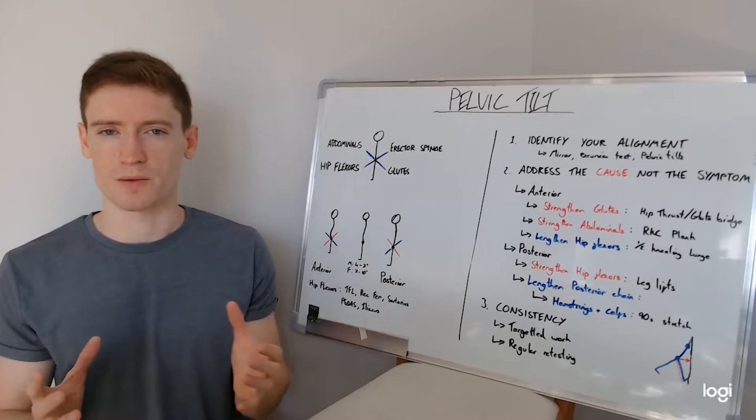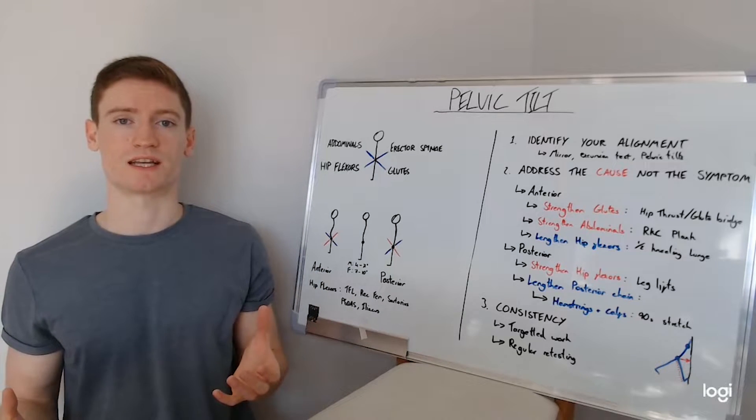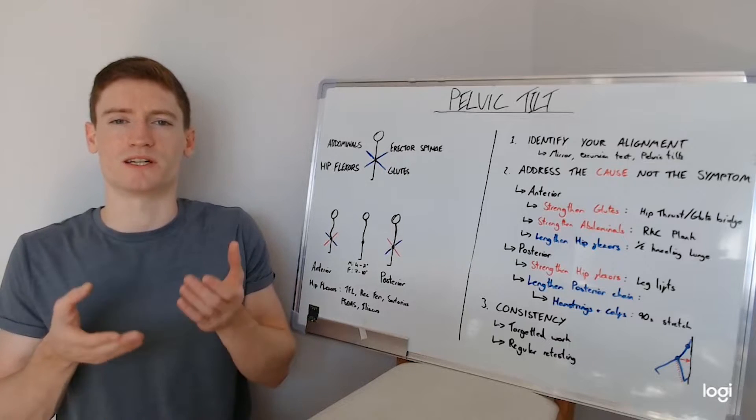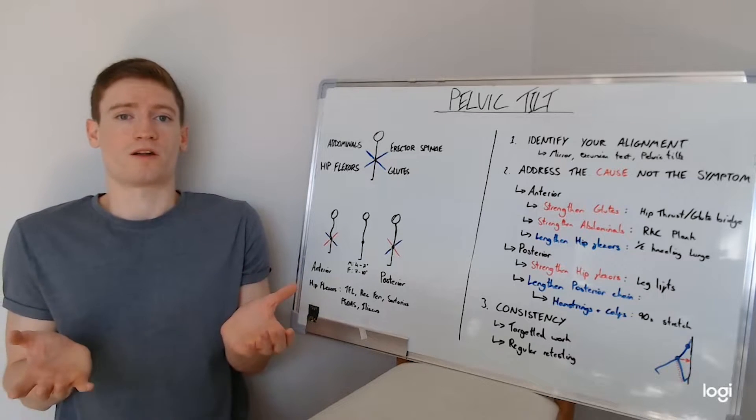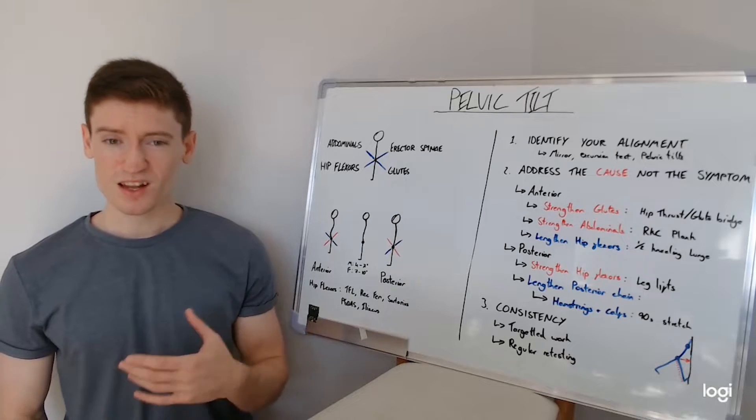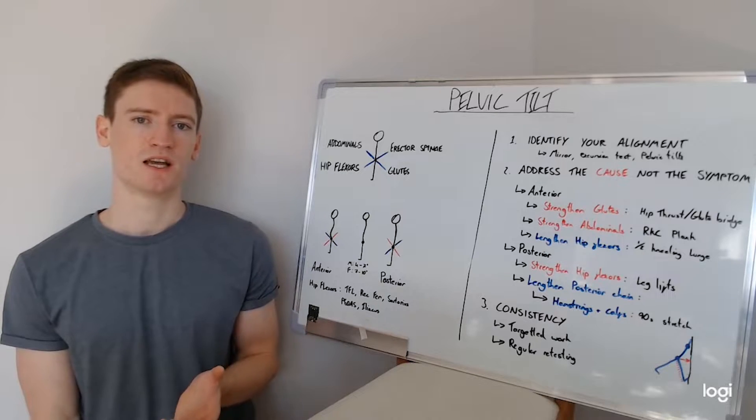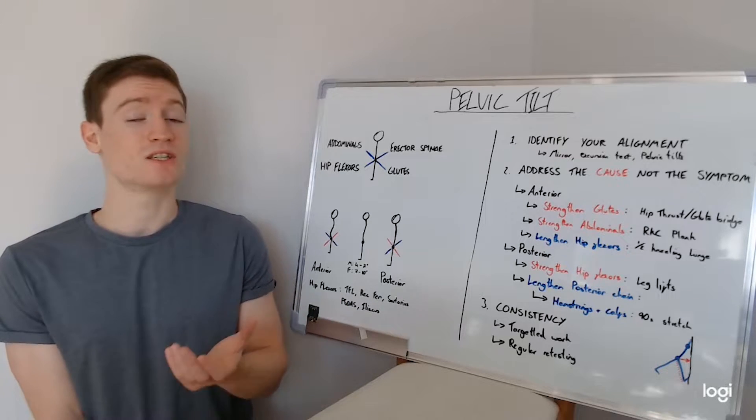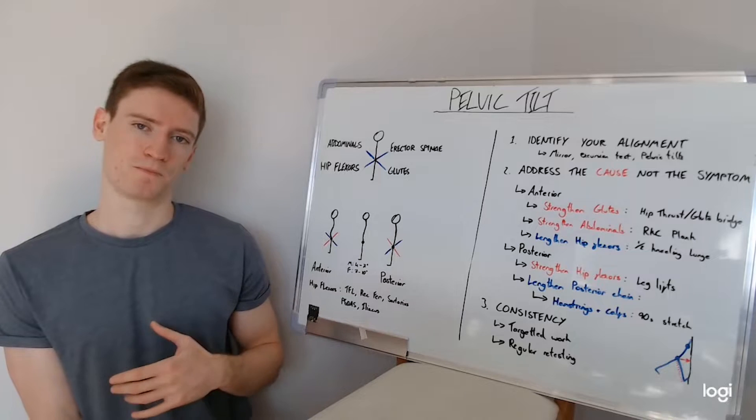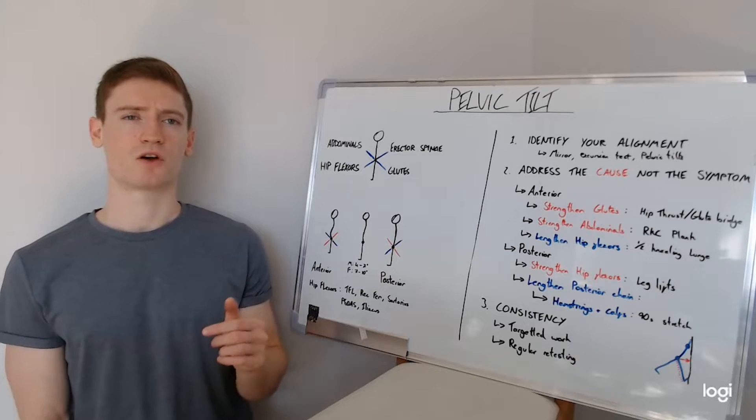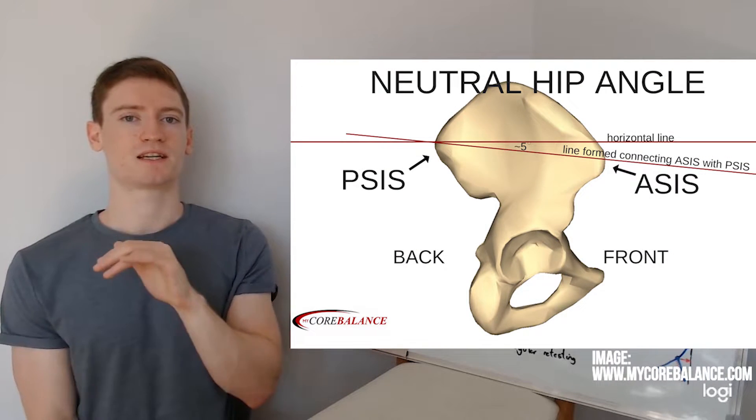So the first protocol, now that we've got a bit more of an understanding of how it all ties together, is then to dive a little bit into identifying yourself, where is your pelvic alignment at? So there's a couple of easy ways to do this. The simplest one that you can do at home is just to find yourself a mirror and stand side on.